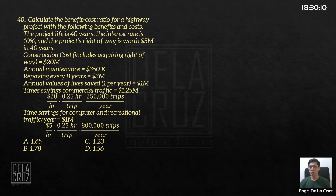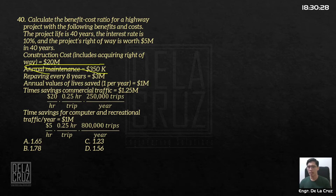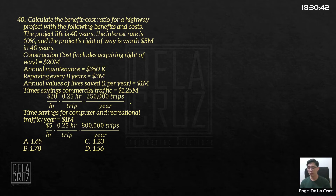The project's right-of-way is worth 5 million in 40 years. Construction costs including acquiring of right-of-way: 20 million. Annual maintenance, repaving every 8 years. Annual values of lives saved: 1 million per year. Time savings for commercial traffic: 1.25 million.